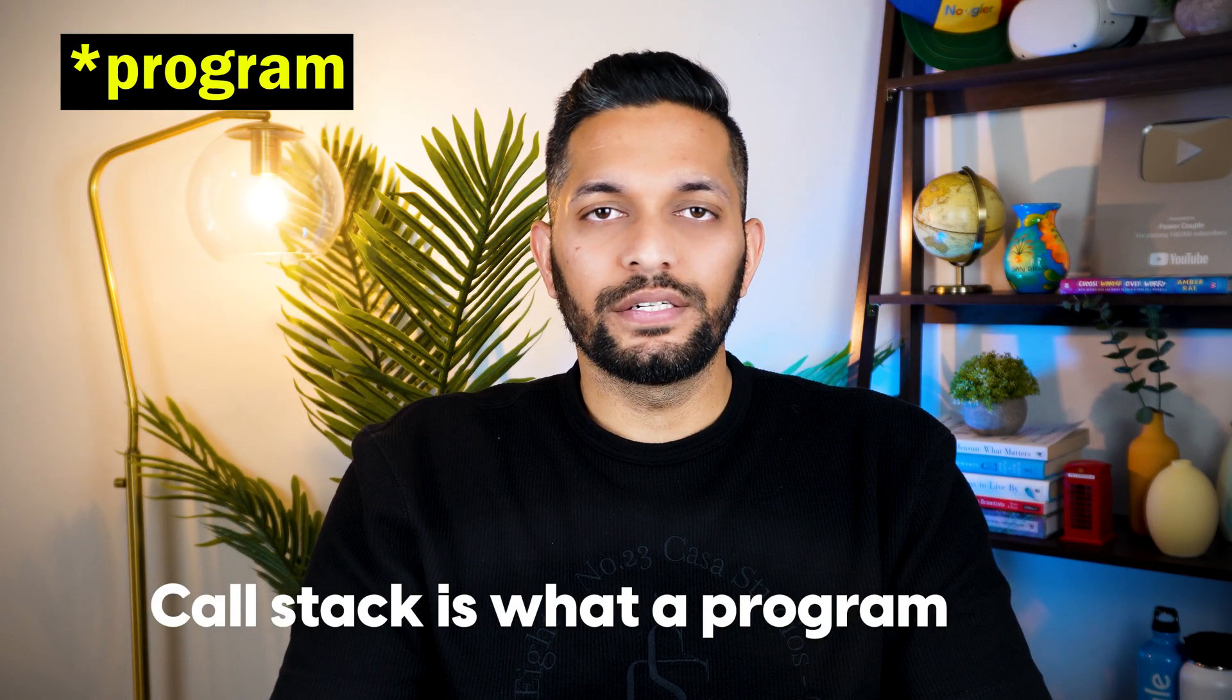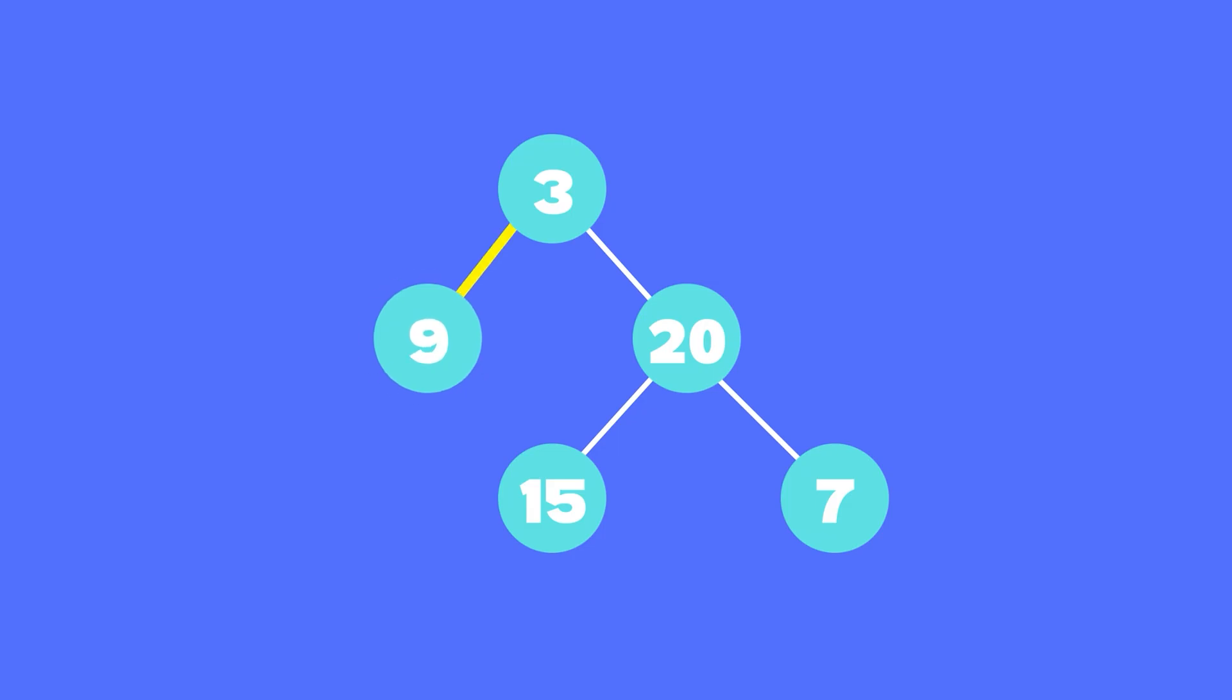For those who don't know, a call stack is what a function uses to track all the function calls. So when you call the max depth function with the root node 3, that call gets put on a stack. And when the root node calls the node with the value 9 to its left, that call gets put on top of the previous call.